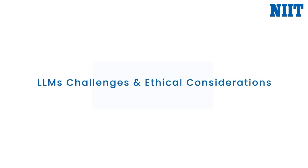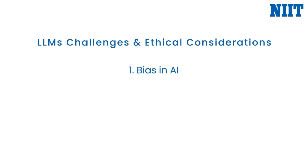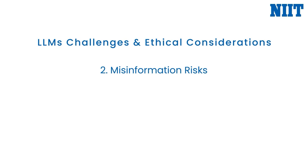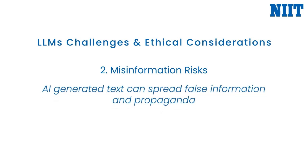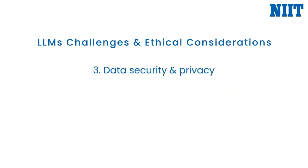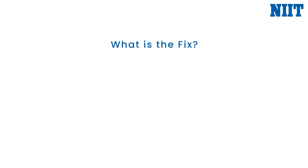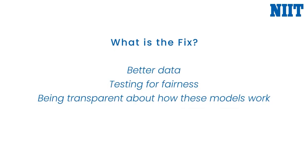While LLMs unlock incredible possibilities, they also come with significant challenges and ethical considerations. First, bias — these models learn from massive amounts of internet data, and if there is bias in that data, the model can pick it up and even amplify it. Then there is misinformation: LLMs are great at sounding confident even when they are wrong, which can be dangerous. There are also serious concerns around privacy and data security. The fix comes down to using better data, testing for fairness, being transparent about how these models work, and building AI responsibly with guardrails.